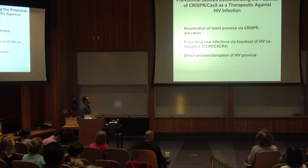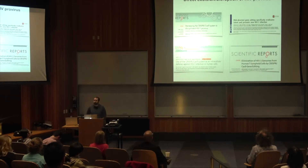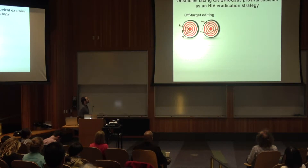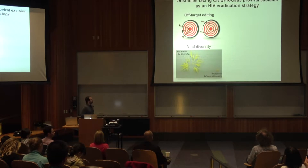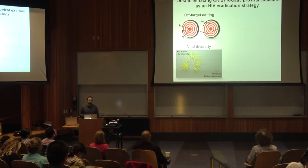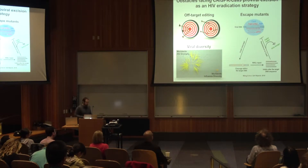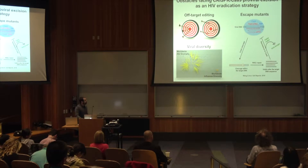As far as direct excision of the provirus is concerned, several studies have demonstrated its potential as a therapeutic, but there are still several barriers that need to be overcome to push this into the clinic. Those barriers include: first, off-target editing, which is always an issue with CRISPR-Cas9. Second, viral diversity — HIV is an extremely diverse virus, so you have to account for this when designing guide RNAs. And third, viral escape mutants, which are generated by Cas9-induced indels. Since HIV already mutates a lot due to reverse transcription, sometimes these indels are actually beneficial to the virus.